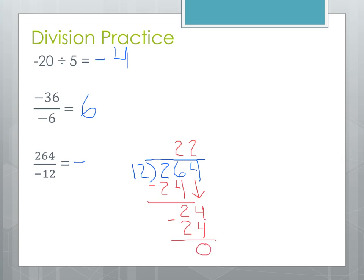Just a heads up: in this section of DMA you will very rarely, if ever, have a remainder when doing division — you should always get whole number answers. We won't work with remainders until DMA 20. So for the most part, you should always have a remainder of 0. Our long division answer is 22, and placing the negative sign, the final answer is negative 22.